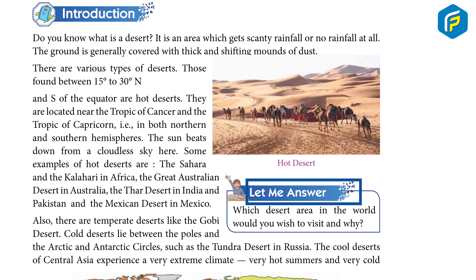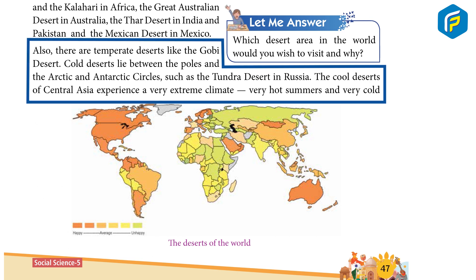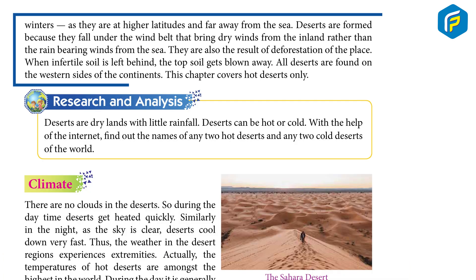There are also temperature deserts like the Gobi Desert. Cold deserts lie between the poles and the Arctic and Antarctic circles, such as the Tundra Desert in Russia. The cold deserts of Central Asia experience a very extreme climate — very hot summers and very cold winters. As they are at higher latitudes and far away from the sea, deserts are formed because they fall under the wind belts that bring dry winds from the inland rather than the rain-bearing winds from the sea.